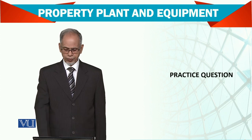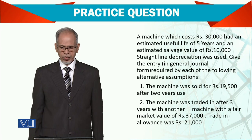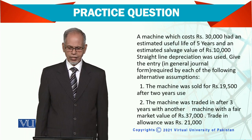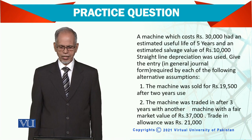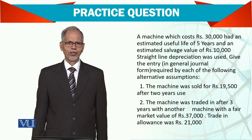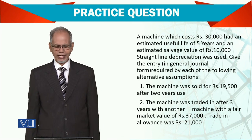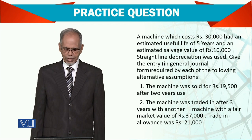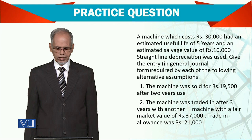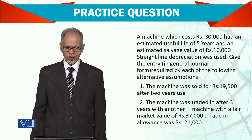Let's see another practical question. A machine which cost 30,000 had an estimated useful life of 5 years and an estimated salvage value of 10,000. So in this case, the depreciable value is 30 minus 10 — 20,000 — and straight line depreciation is used. We need to give the entry in the general journal required for each of the following alternatives.